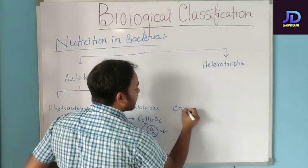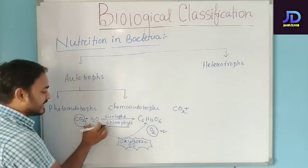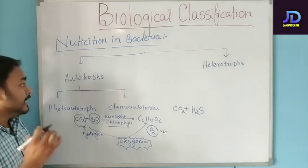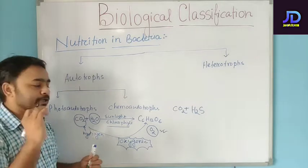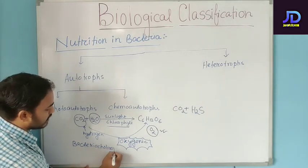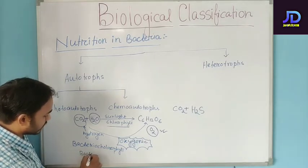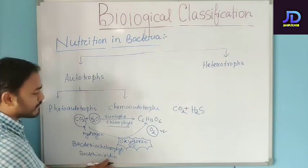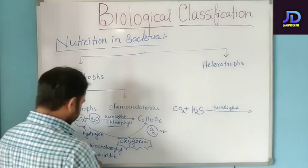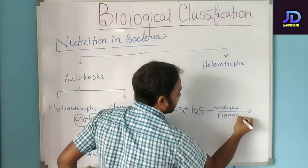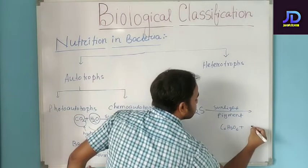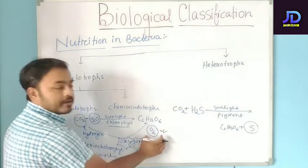In bacteria, the difference is that in case of plants water is required, but in case of bacteria, in place of water, hydrogen sulfide is used. Bacteria also have two pigments: bacteriochlorophyll and bacterioviridine. In the presence of sunlight and these pigments, carbohydrate or glucose will be produced. As a by-product, sulfur will be produced — in plants it was oxygen, but in bacteria it is sulfur. Carbon dioxide is reduced by hydrogen, but hydrogen is provided by hydrogen sulfide. Since no oxygen is evolved, this is called anoxygenic.